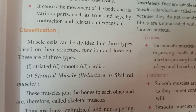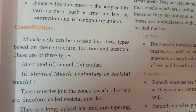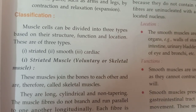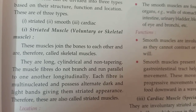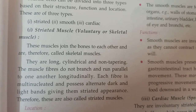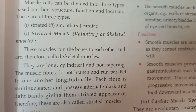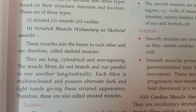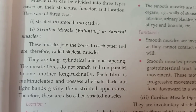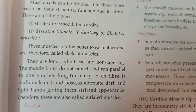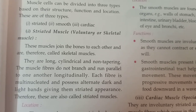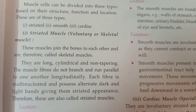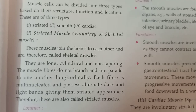The three types are: striated muscles, smooth muscles, and cardiac muscles. Striated muscles are also called voluntary or skeletal muscles. These muscles join the bones to each other and are therefore called skeletal muscles. They are long, cylindrical, and non-tapering. The muscle fibers do not branch and run parallel to one another longitudinally. Each fiber is multi-nucleated, containing many nuclei, and possesses alternate dark and light bands giving them a striated appearance.